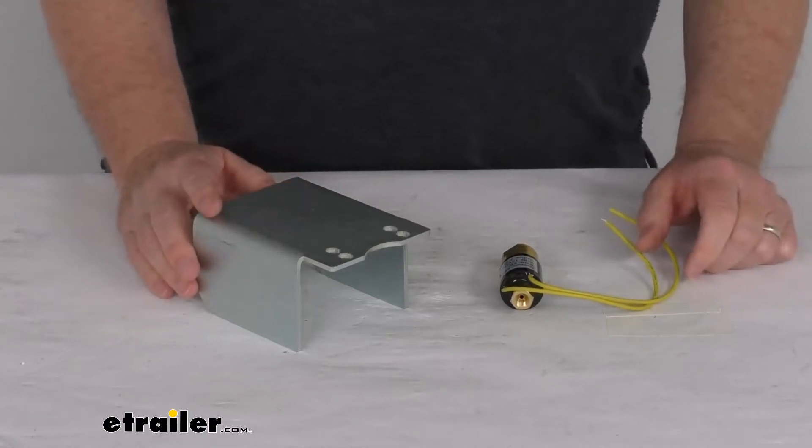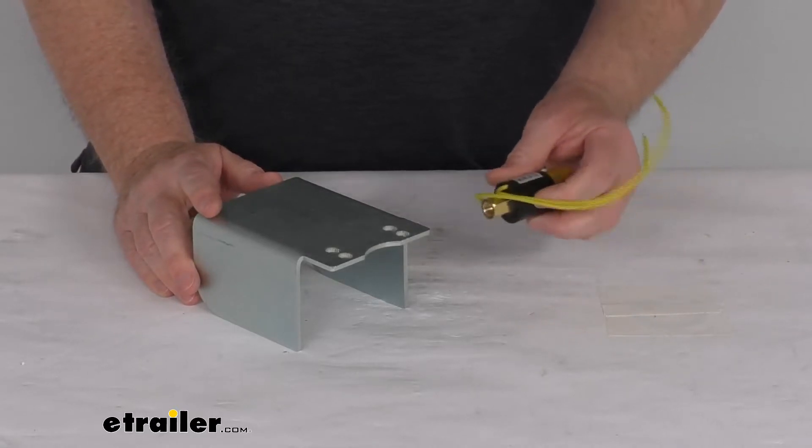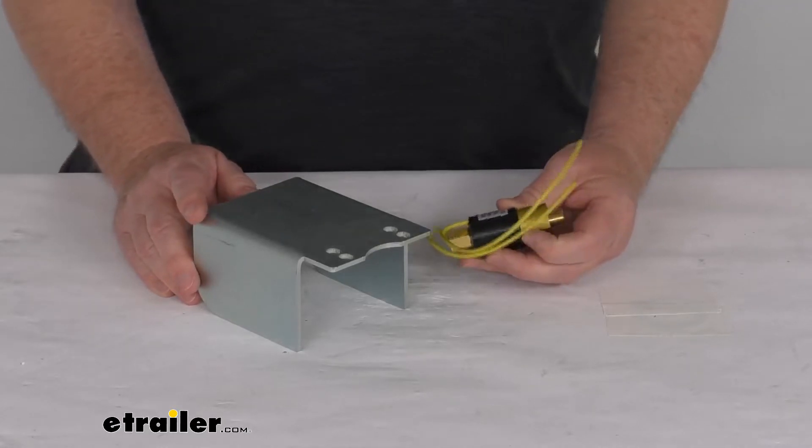Now this solenoid kit allows you to replace or add a reverse lockout solenoid to your Demco hydraulic trailer brake actuator. This allows you to move into reverse without engaging your trailer brakes.